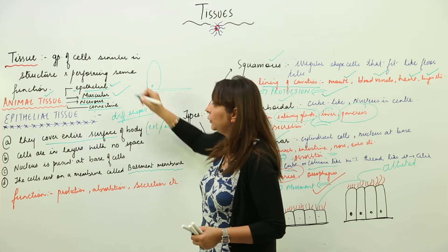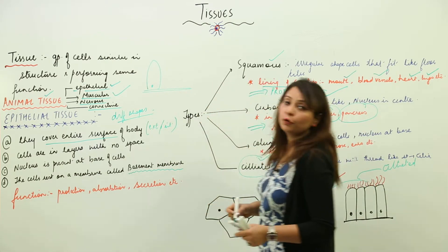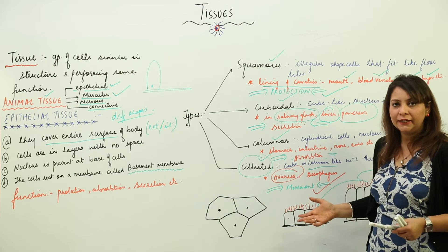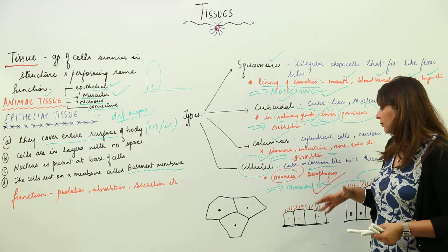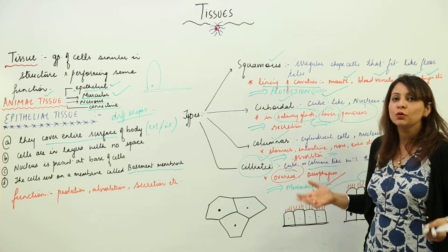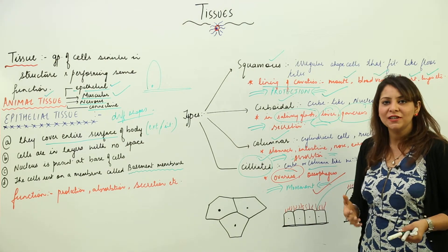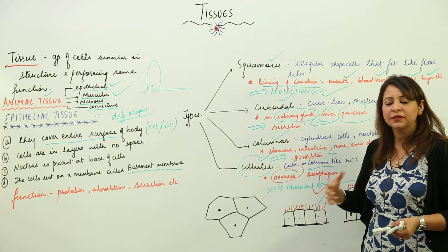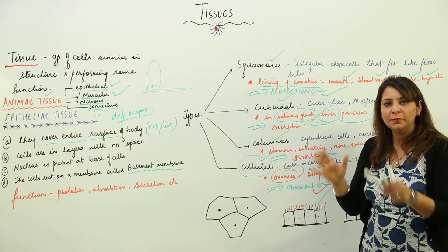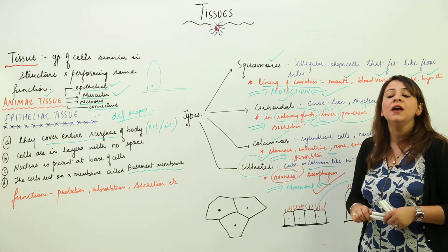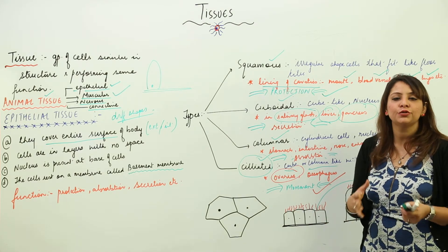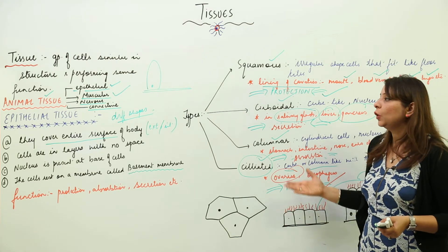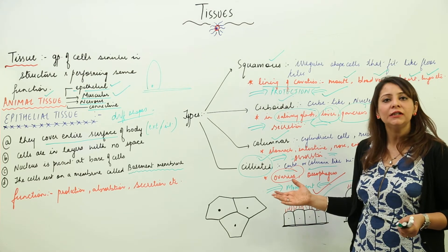Now we are going to start with another tissue — the muscular one. But before we do that, go through this and try to draw the diagrams carefully from your book and label them properly, because in biology you need to draw diagrams very carefully. This is what epithelial tissue is.